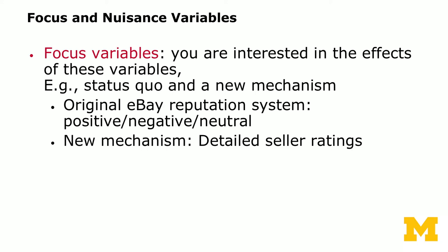Let's first go through focus versus nuisance variables. For an experimenter, the focus variable is what you're interested in — you are interested in studying the effects of these variables. Oftentimes this could be a status quo institution versus a new mechanism. For instance, eBay used to have a classic reputation system, where after each transaction the buyer can rate the seller at three levels: positive, neutral, or negative.